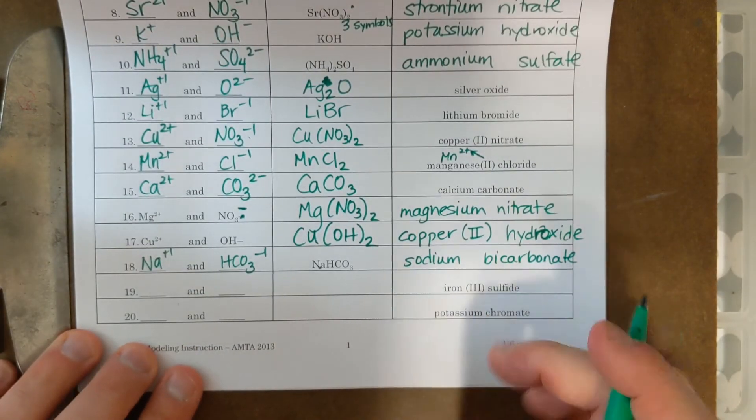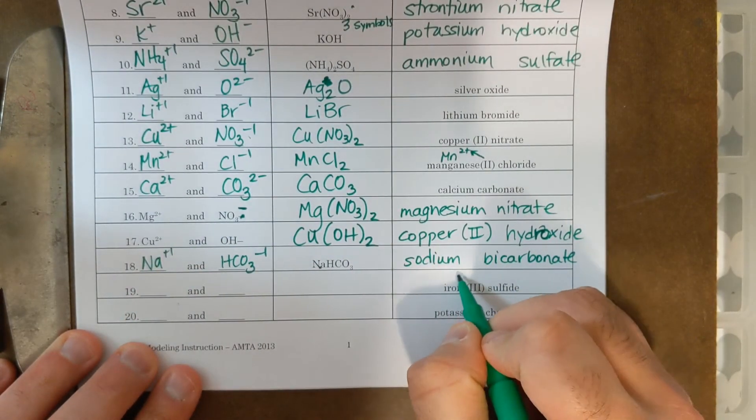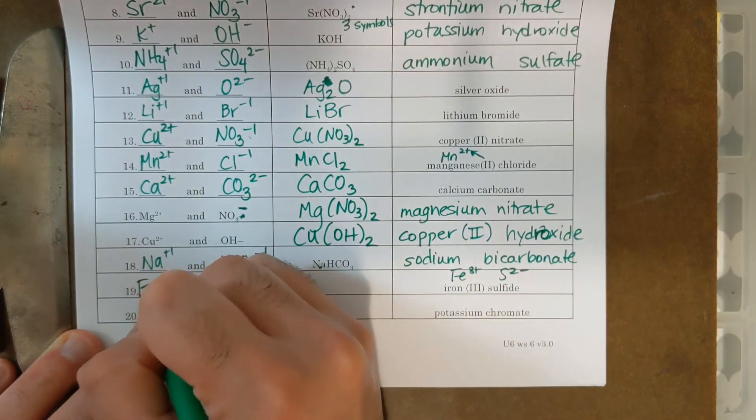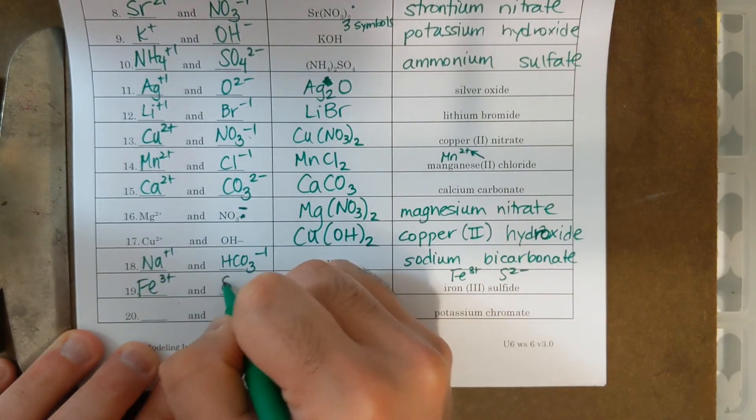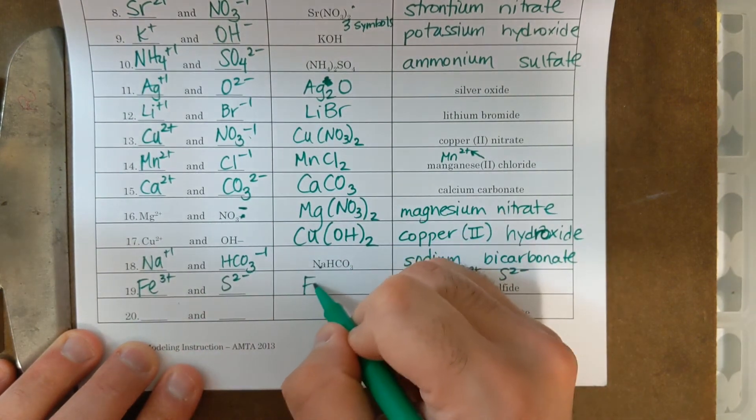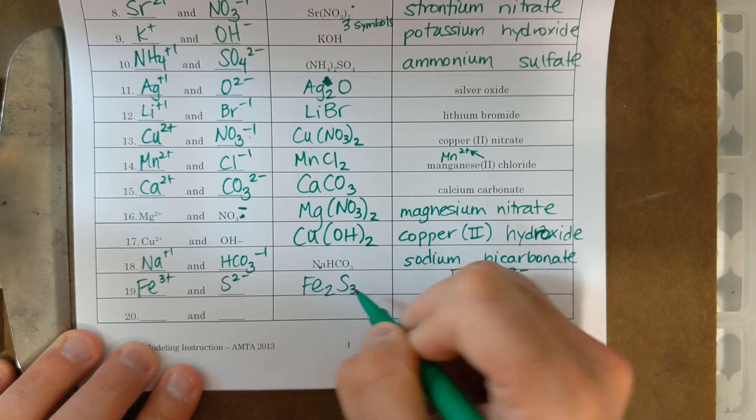Next one, I have iron three sulfide. Iron Roman numeral three, I mean it's Fe three plus, and sulfide is two minus. Fe three plus, S two minus. If I do the crisscross method, I'll get Fe two, S three.